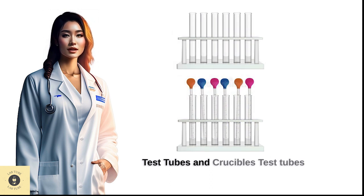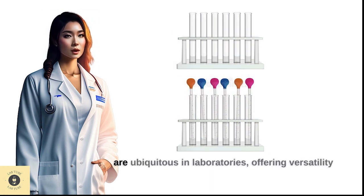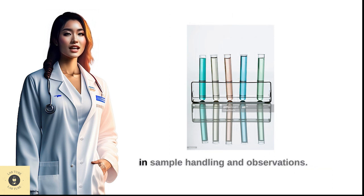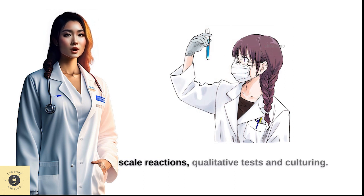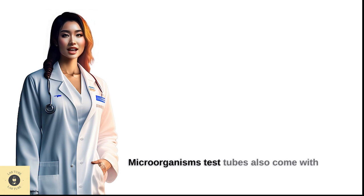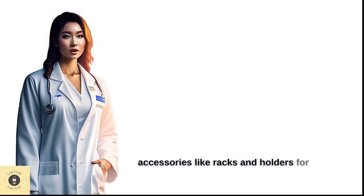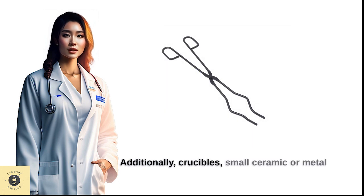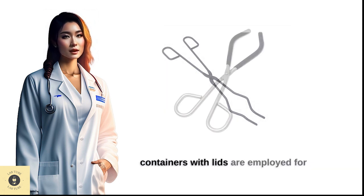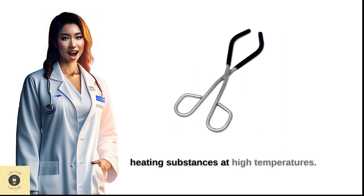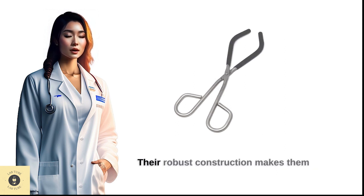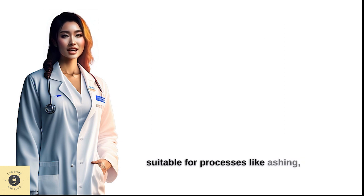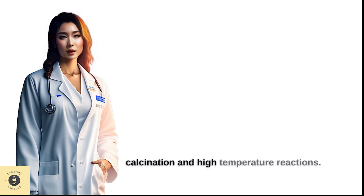Test tubes are ubiquitous in laboratories, offering versatility in sample handling and observations. They are commonly used for small-scale reactions, qualitative tests, and culturing microorganisms. Test tubes also come with accessories like racks and holders for efficient storage and handling. Additionally, crucibles — small ceramic or metal containers with lids — are employed for heating substances at high temperatures. Their robust construction makes them suitable for processes like ashing, calcination, and high-temperature reactions.